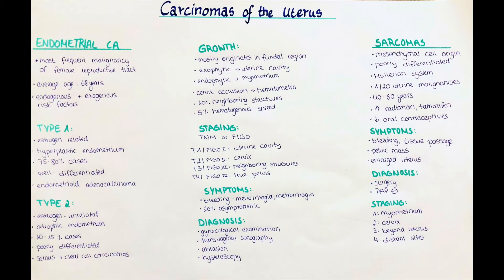In stage 1, the five-year survival rate is approximately 85%, compared to only 20% in stage 4. The grading or aggressiveness of the tumor also matters: better differentiated cells generally mean a better prognosis. In a grade 1 tumor, 95% of cancer tissue forms glands. In grade 2, between 50 and 94% forms glands. In grade 3, less than half of the tumor forms glands.